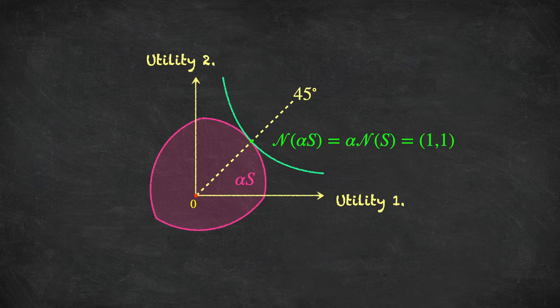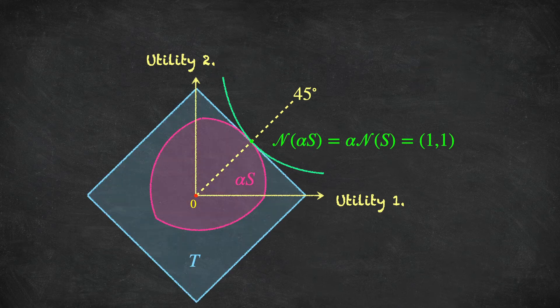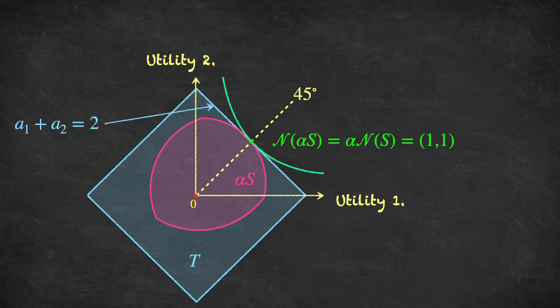For the next step of the proof, let's zoom out a little bit. We still have our bargaining problem alpha*S, and the Nash solution to alpha*S is on the 45-degree line at the point (1, 1). Next, suppose I contain the bargaining set alpha*S in a large symmetric square labeled capital T. The north-east boundary of this square has the equation A1 plus A2 equals 2 — it has a slope of minus one and passes through the point (1, 1) on the 45-degree line.